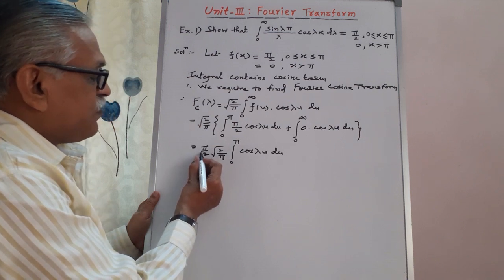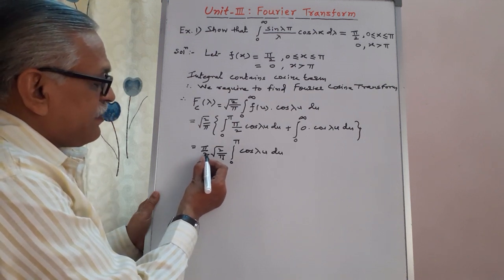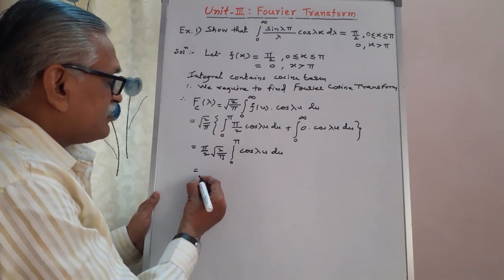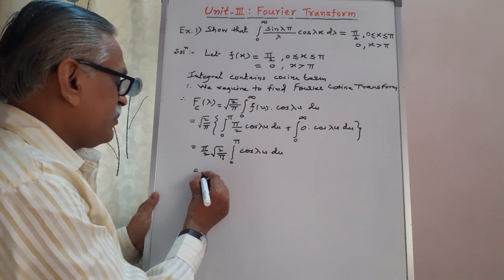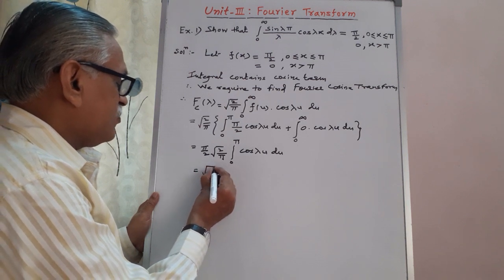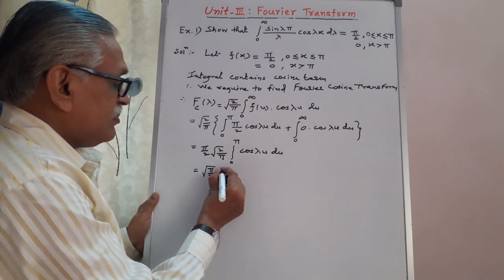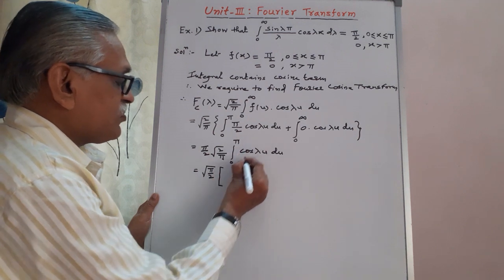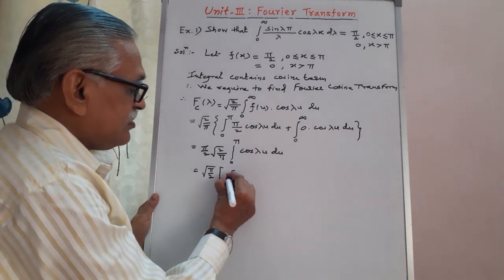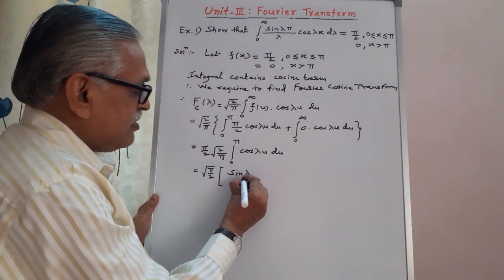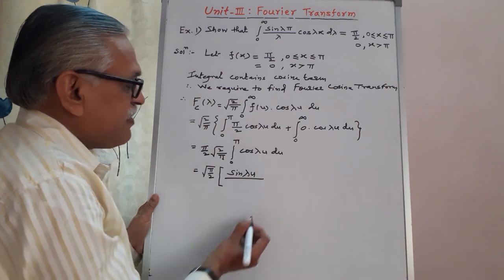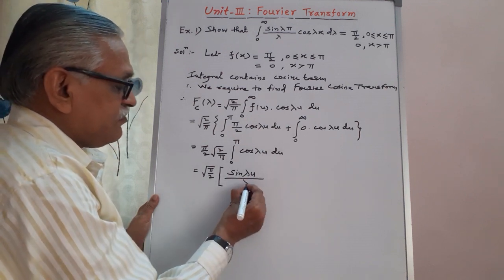This simplifies: √(π/2) cancels with 1, and the remaining constant is √(π/2). The integration of cosine gives sin(λu) divided by the coefficient of u, which is λ.